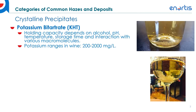Potassium bitartrate, or KHT, will precipitate depending on the holding capacity, which is made up of the alcohol, pH, temperature, storage time, and various interactions with other macromolecules present. These factors affect the nucleation and induction time for potassium bitartrate to form.